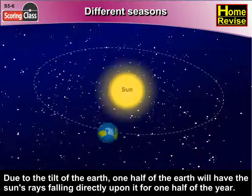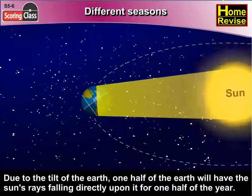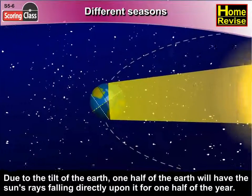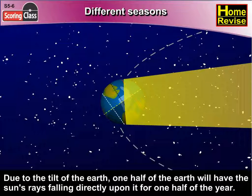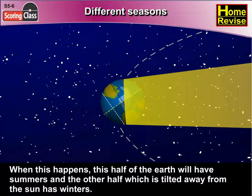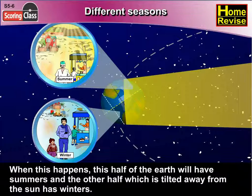Due to the tilt of the earth, one half of the earth will have the sun's rays falling directly upon it for one half of the year. When this happens, this half of the earth will have summers, and the other half which is tilted away from the sun has winters.